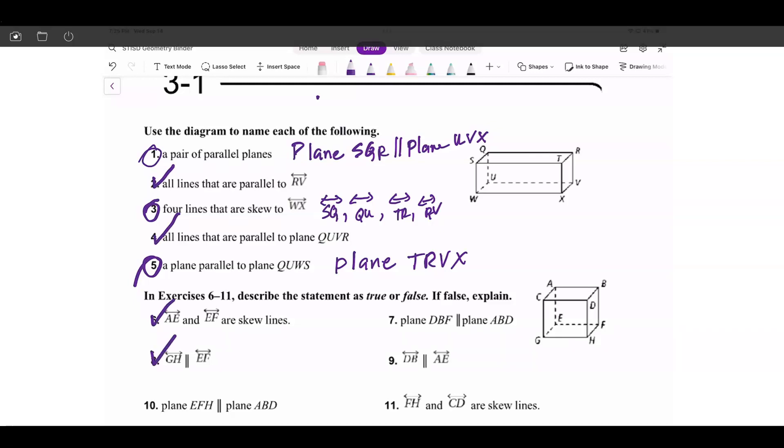It says, in exercise six through 11, describe the statement as true or false. So plane DBF, which is the one on the side, and plane ABD, which is the one on top, obviously they intersect at a line, so that's false. I just gave you the reason, so you have to write it out. It's false because the two planes intersect.